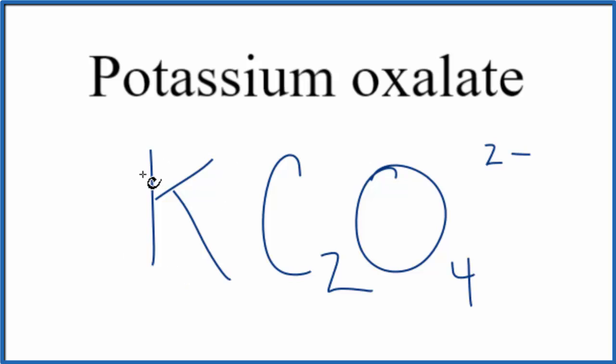Because we have this metal here and a group of nonmetals, this is an ionic compound, and the charge needs to balance. Potassium on the periodic table is in group 1, so it's 1 plus. We said this whole oxalate here is 2 minus.